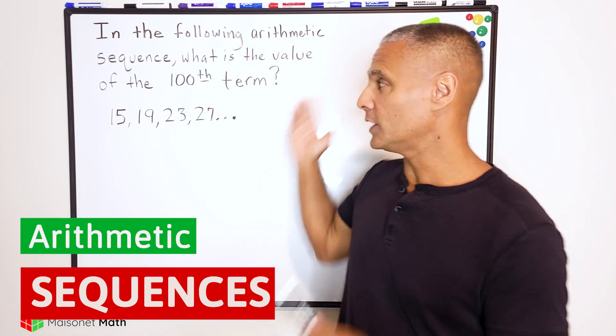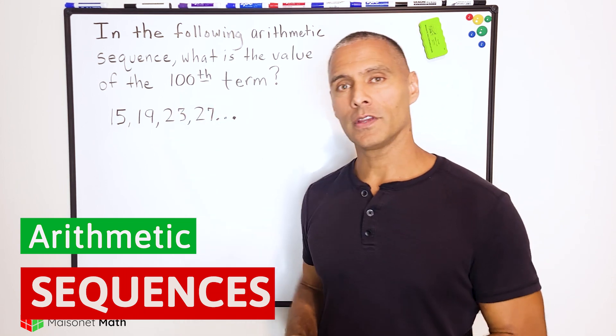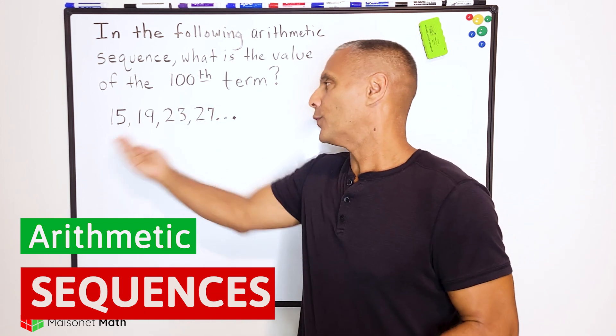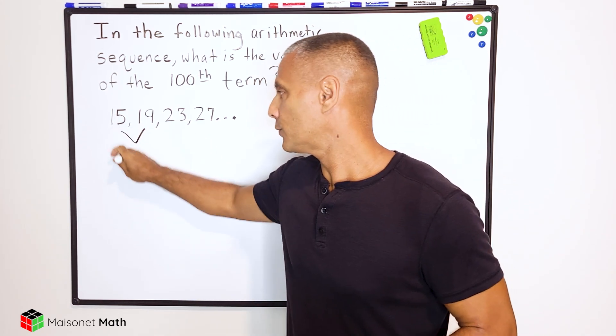So what we have here is an arithmetic sequence, and we have to determine the hundredth term in the sequence. Now notice they already give us the first four in the sequence, and we should notice that the difference between each term is four.